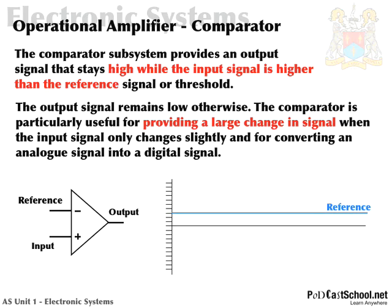Consider this graph for a second. Say for example we had the reference here at a particular voltage level, and we inputted a constant DC voltage at the non-inverting input. We know from our equation that the inverting input and the non-inverting input are compared, and the difference is multiplied by a gain which is normally very large — we learned that in the last podcast.